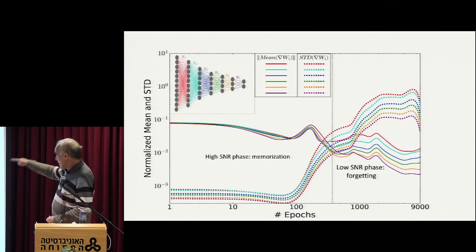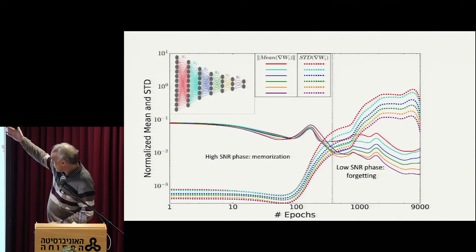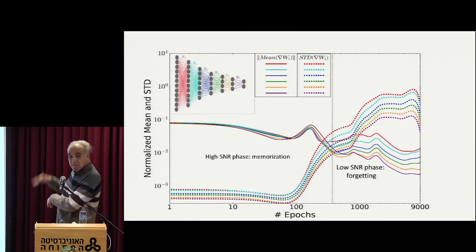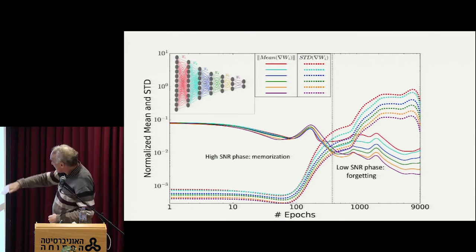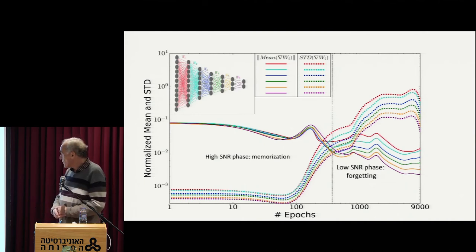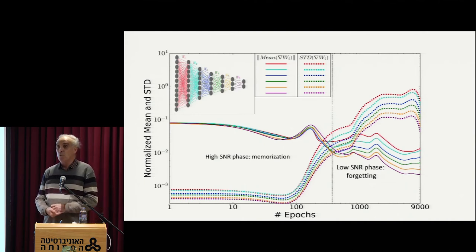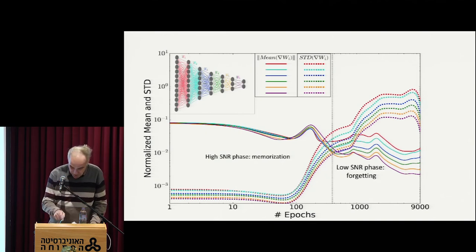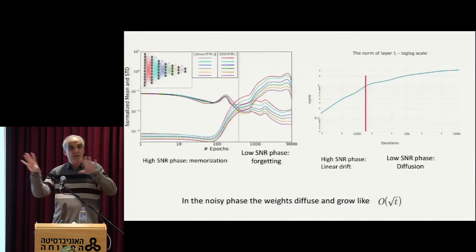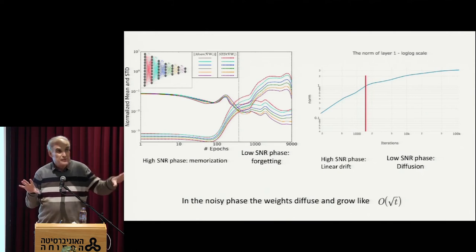Once you get to this point of 300 epochs, you get this very big change. The mean of the gradient goes down and actually disperses in a very interesting way, and the standard deviation actually goes up. Most of the time between 300 and 9,000 epochs in this case, the signal-to-noise ratio of the gradients is very low — about minus 10 dBs. Something very different in terms of the dynamic of the training happens before this point and after this point.